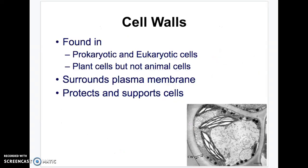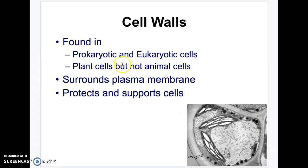Cell walls are found in both prokaryotes and eukaryotes. They basically protect and support the cell. They are not found in animal cells — only plant cells and prokaryotic cells have cell walls.